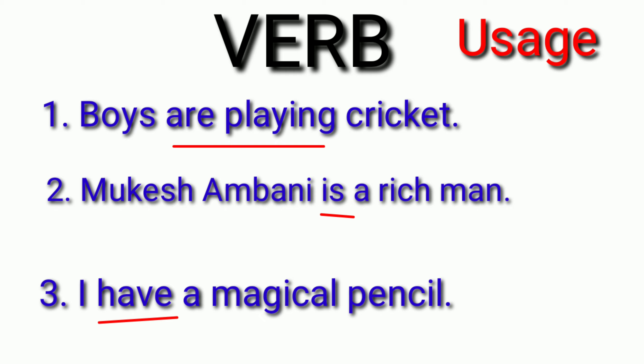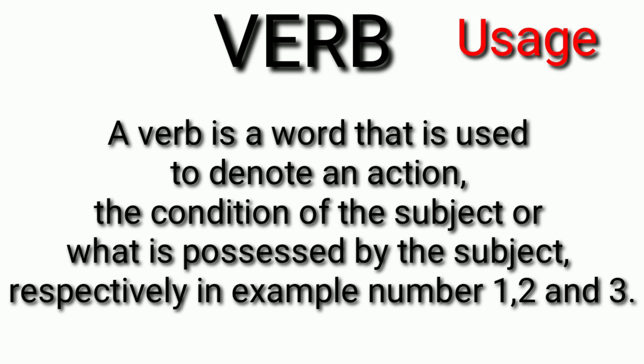After looking at these examples, we can say that a verb is a word used to denote an action, the condition of the subject, or what is possessed by the subject — respectively in example number one, two and three.